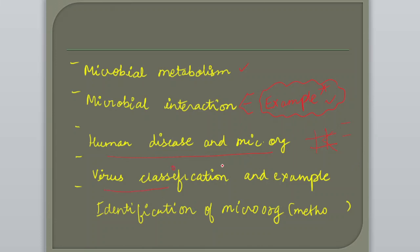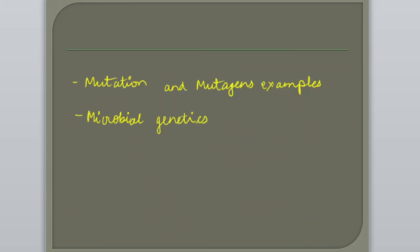Next is virus classification — DNA viruses and RNA viruses — plus examples of which disease is caused by which virus and the main symptoms. Then identification of microorganisms: methods plus examples, including 16S rRNA and hybridization techniques. After that, mutation and mutagens with their examples, and finally microbial genetics — basics of microbial genetics and the operon system.